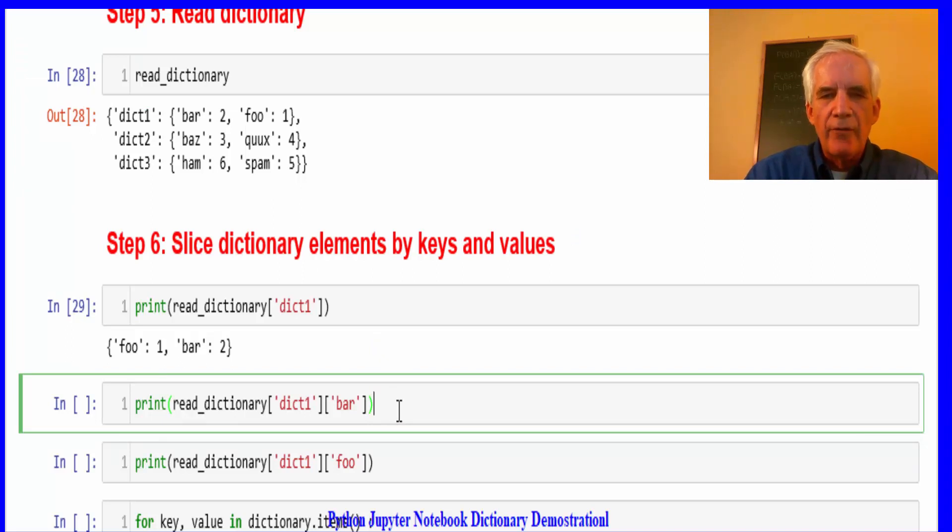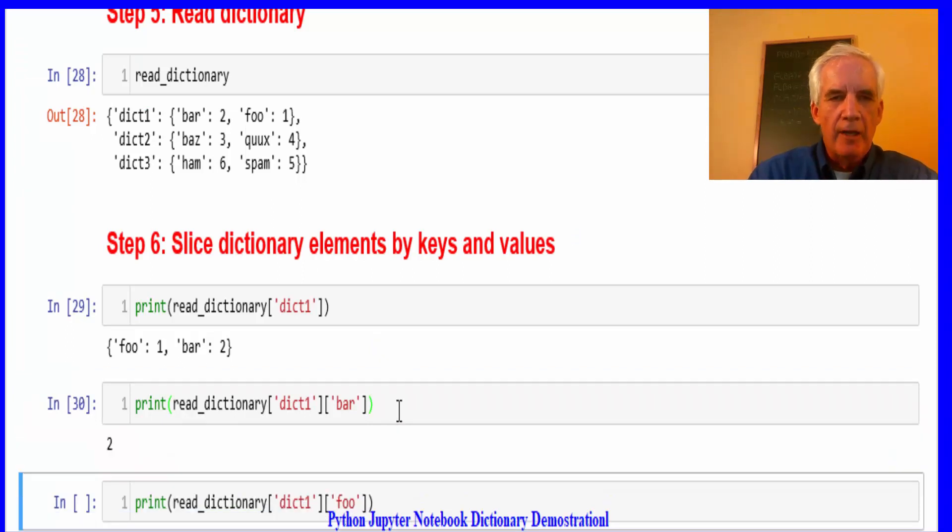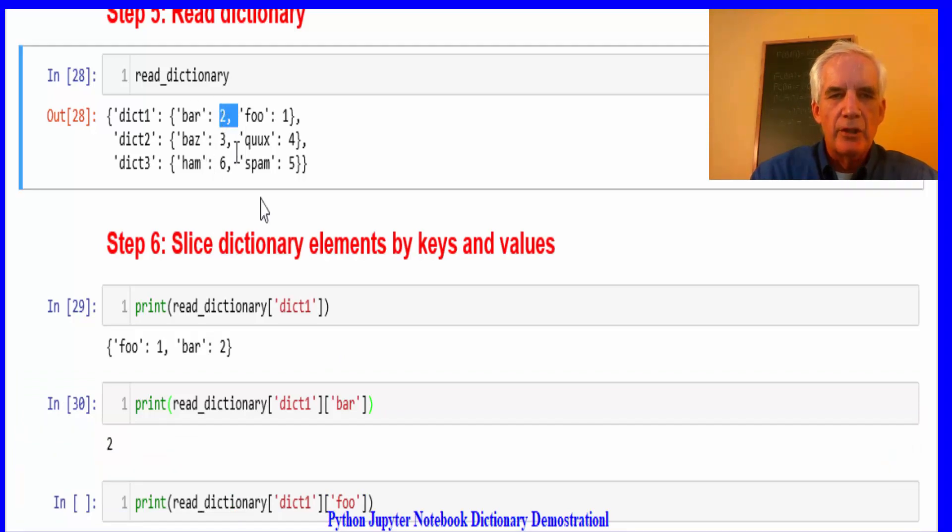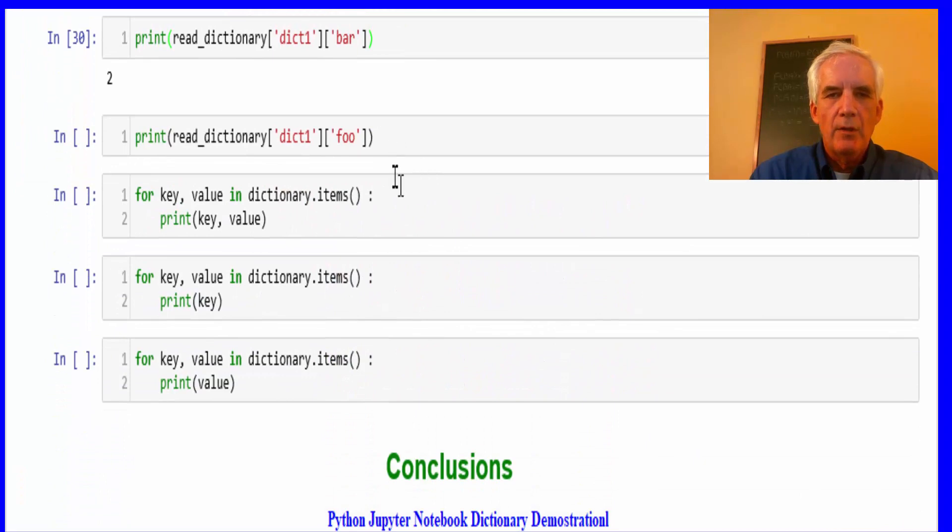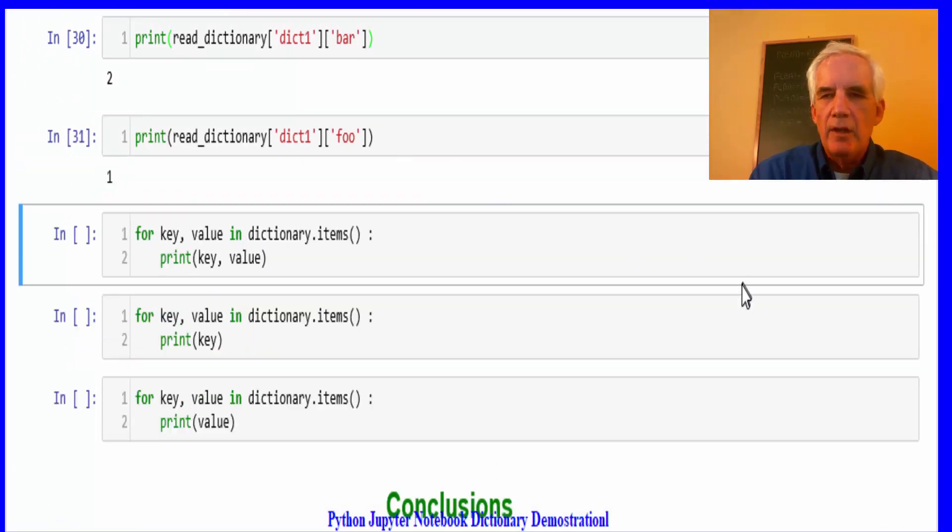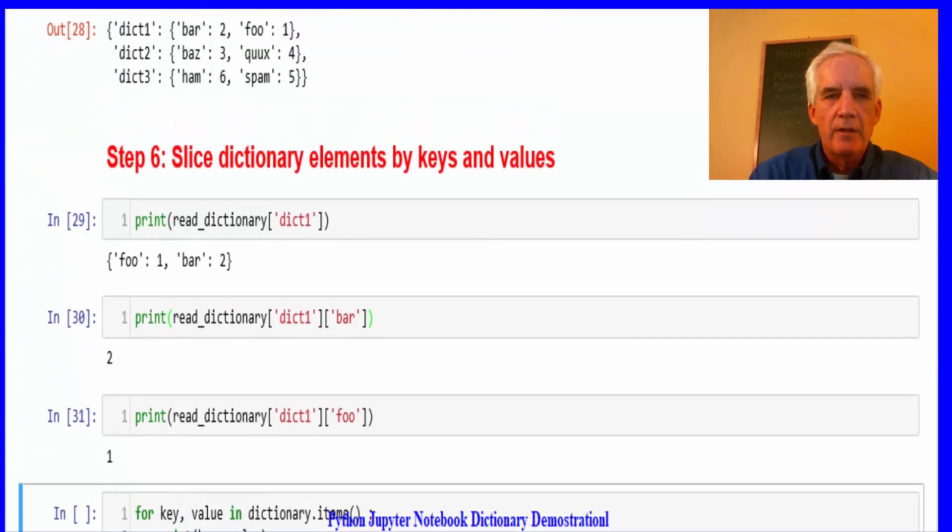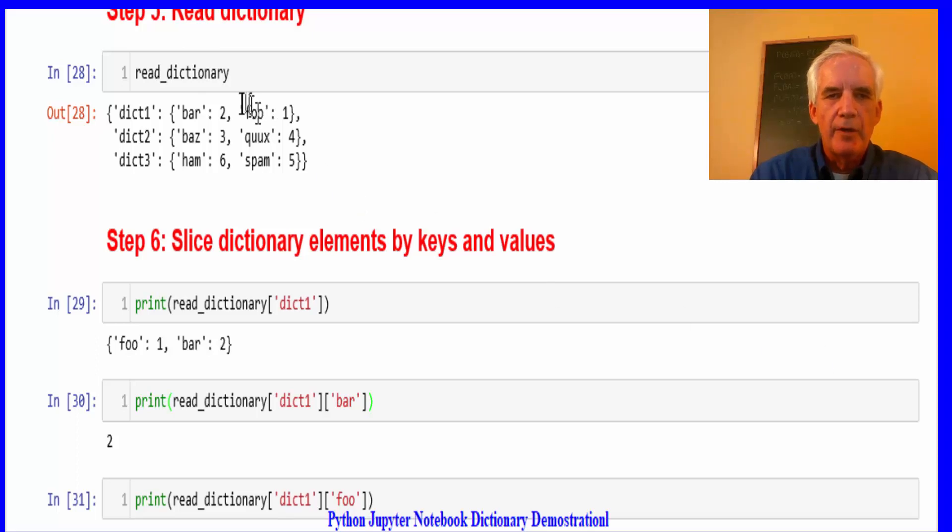Then we'll do the first dictionary in bar and we'll see the two. First dictionary in foo and we'll see one. We see that back up here.